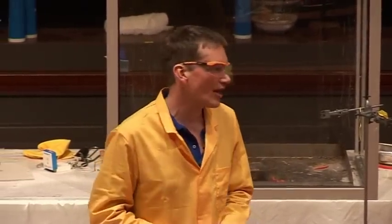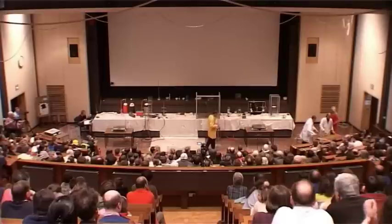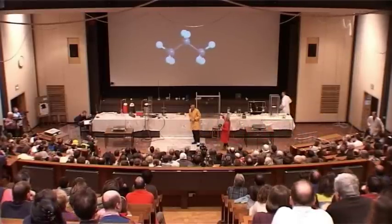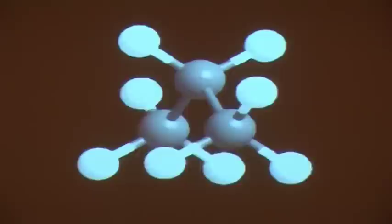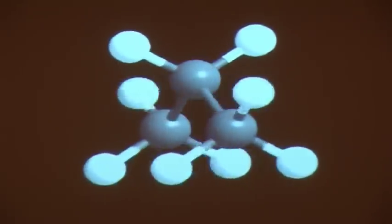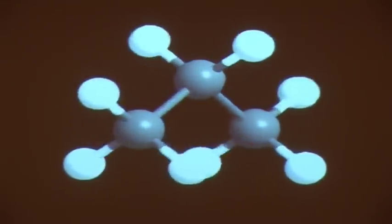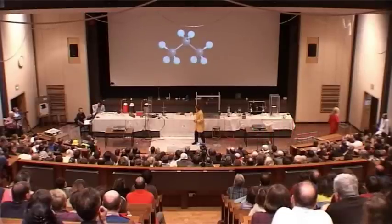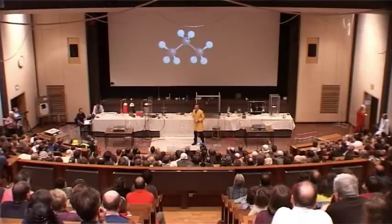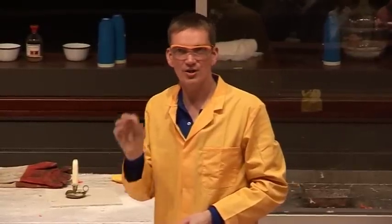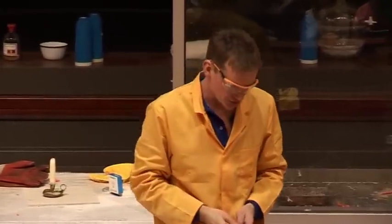What we're going to look at now is another gas that burns, and this gas is a hydrocarbon called propane. This is the chemical structure of propane. The grey spheres here represent carbon atoms. There are three of these in every propane molecule and there are eight hydrogen atoms represented by the white spheres. So propane has the chemical formula C3H8 — three carbons, eight hydrogens.